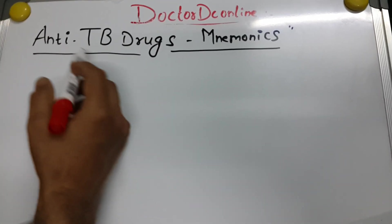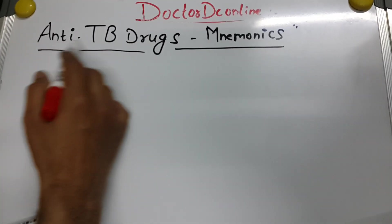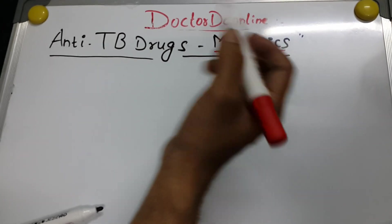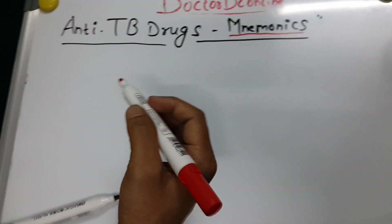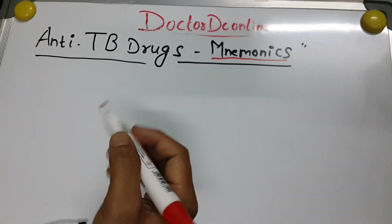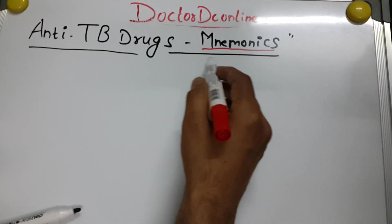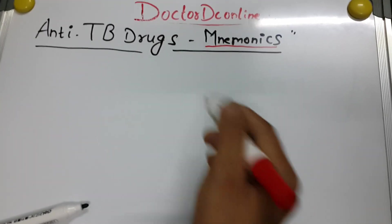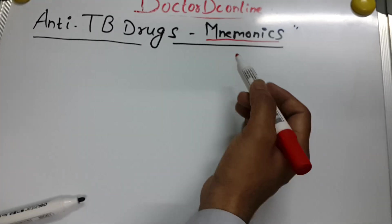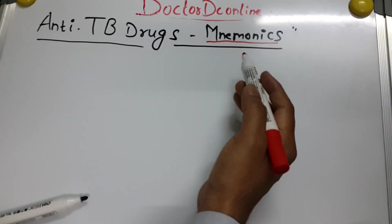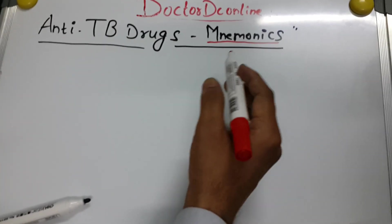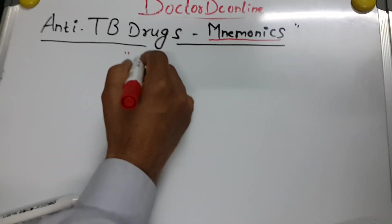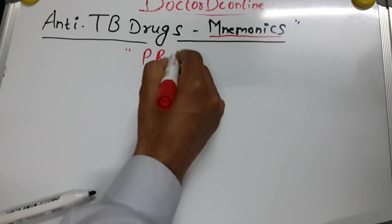Today we are talking about anti-tuberculosis drugs. I'll introduce a mnemonic which may be useful to remember them. Tuberculosis is caused by Mycobacterium tuberculosis. The first-line drugs mnemonic I use is PRIEST: P-R-I-E-S-T.